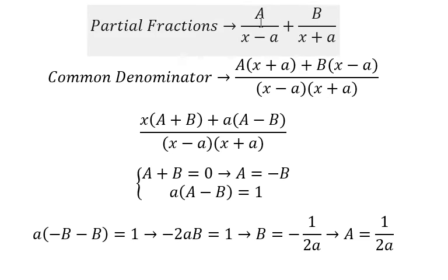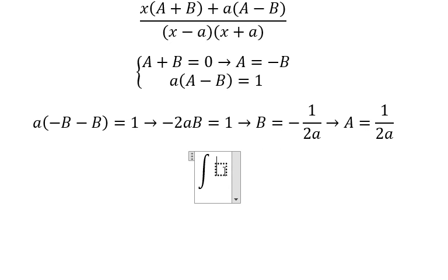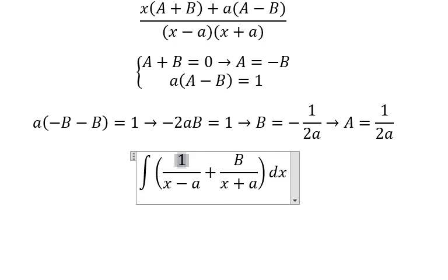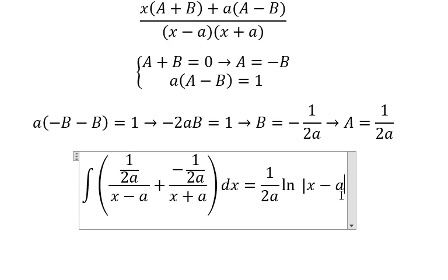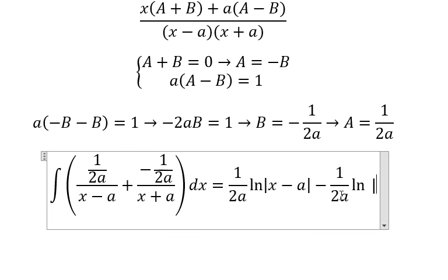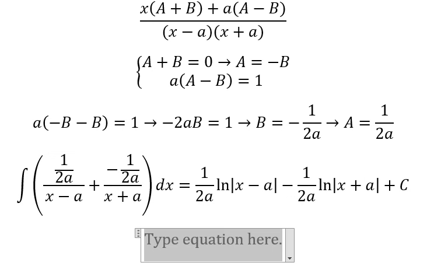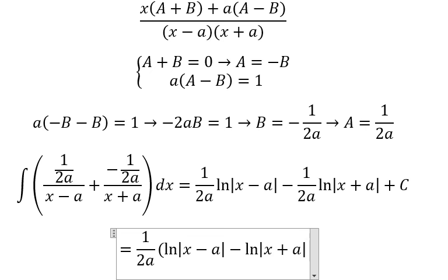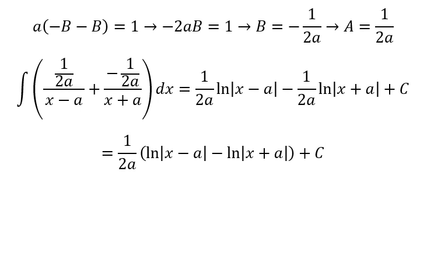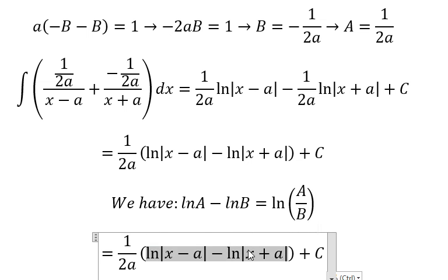After we have A and B, we put them back in here. Now we have the final answer — one over 2a. We can do factorization and now we have the formula. We need to transform this one into this one.